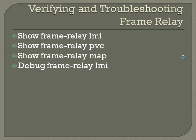Show frame-relay map is going to show you any IPs mapped to different PVCs. If you're having problems with LMI coming up, you can do a debug frame-relay LMI. Anytime you do a debug, make sure when you're done that you do an un-debug all, since that does take up a lot of router resources. And that is it for Frame Relay. Any questions on that portion?